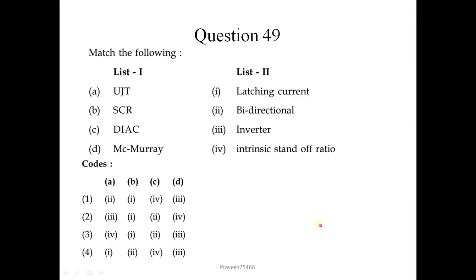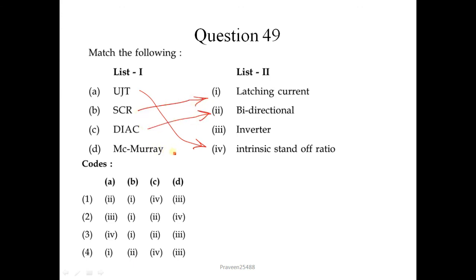Question number 49: match the following. UJT is matched with intrinsic standoff ratio. HCR is matched with latching current. DIAC is matched with bidirectional. And McMurray is matched with inverter. So the correct sequence is 4, 1, 2, 3; the correct answer is the third option.